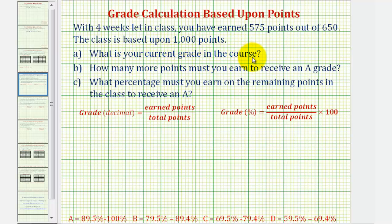What is your current grade in the course? How many more points must you earn to receive an A grade? And finally, what percent must you earn on the remaining points to receive an A in the class?